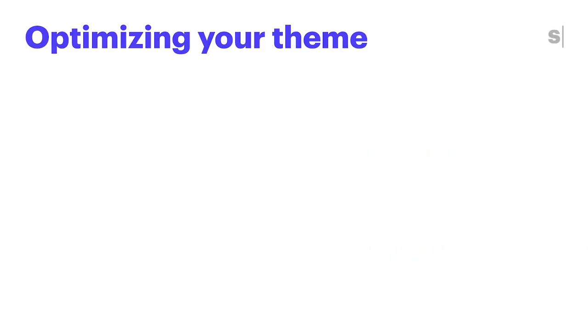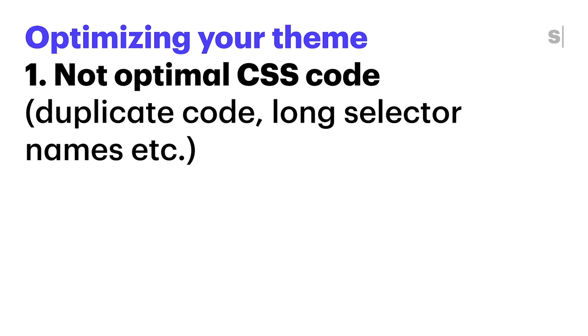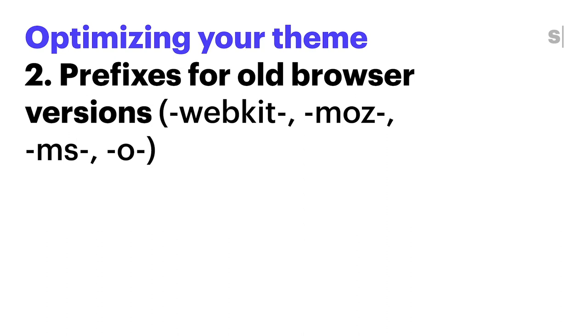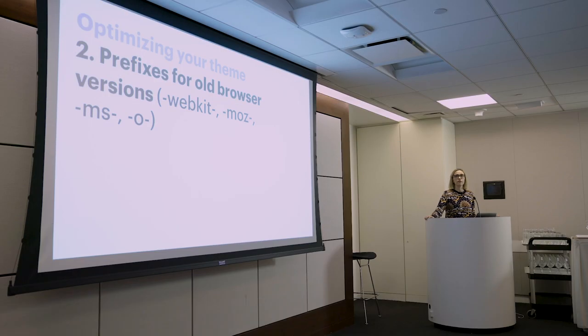The third part, as I mentioned, is the theme itself. Being a plugin, we are not interconnected with the theme, but the theme is supposed to be AMP-ready. I just wanted to share some observations — a couple of things we noticed when looking at different themes. Sometimes themes do not have optimal CSS code: there is duplicate code, long selector names — all of that could be optimized to save space. There are also prefixes for old browser versions that are not necessary for the browser versions supported by AMP.